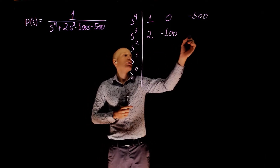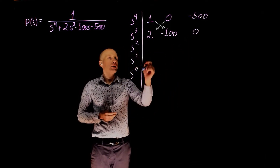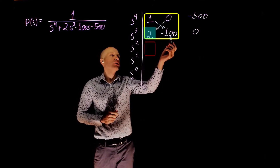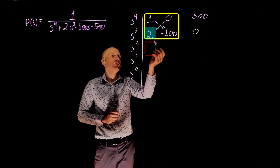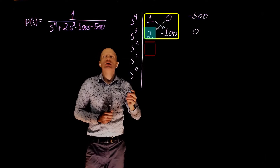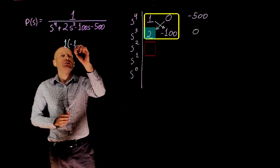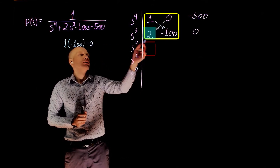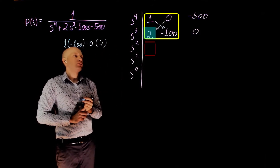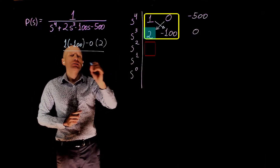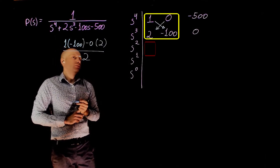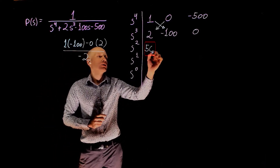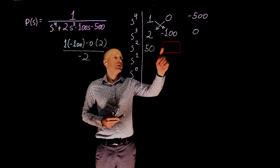We complete the array with 0 here. For the s² row element, we compute 1 times negative 100, minus 0 times 2, divided by negative negative 2. So we have negative 100 divided by negative 2 — this coefficient is 50.